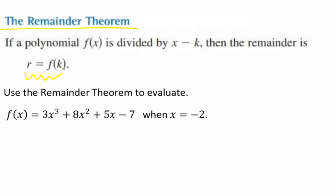So let me show you an example. Let's go through an example where we're using the remainder theorem to evaluate. Here we have f of x equals 3x to the third plus 8x squared plus 5x minus 7. And we see that all of our terms are taken care of, so we don't need any zero placeholders. And it says when x equals negative 2.